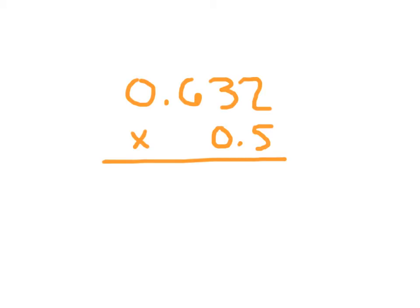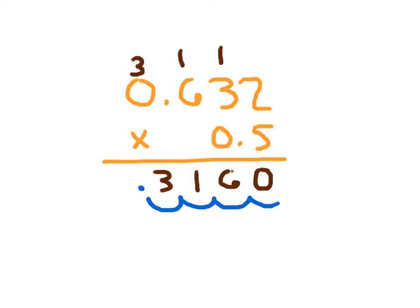The process with more decimal places is still exactly the same. We have one decimal place in one factor and three decimal places in the other — 1 plus 3 is 4 — so we need four decimal places in our answer. Multiplying 5 times 2 is 10, place 0 regroup 1. 5 times 3 is 15 plus 1 is 16, place 6 regroup 1. 5 times 6 is 30 plus 1 is 31, place 1 regroup 3. 5 times 0 is 0 plus 3 is 3. Counting four decimal places from the right and placing a 0 in front gives us 0.3160.